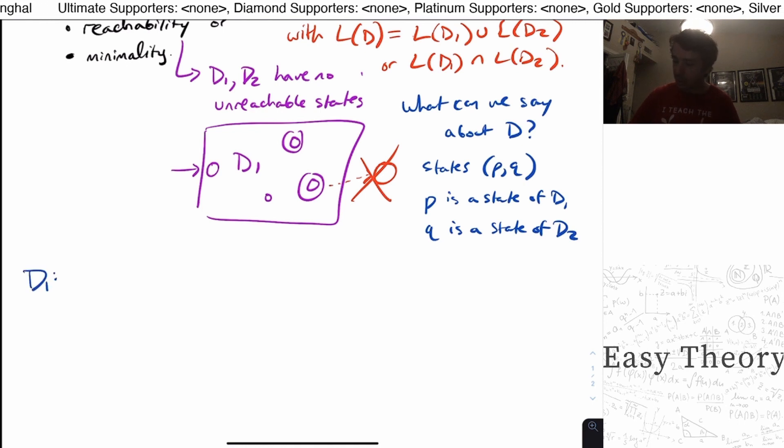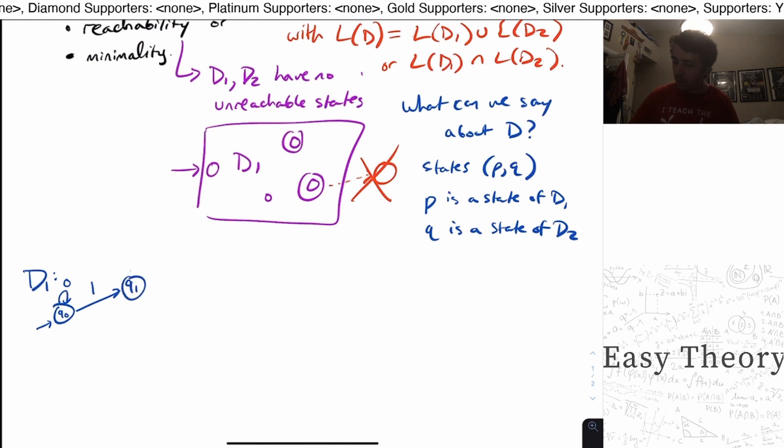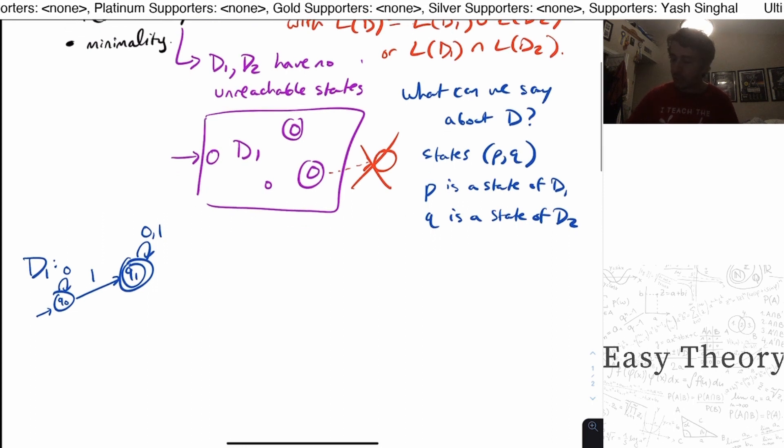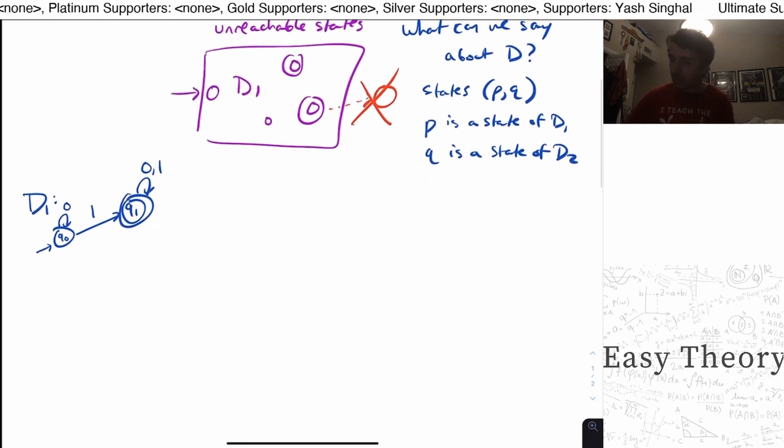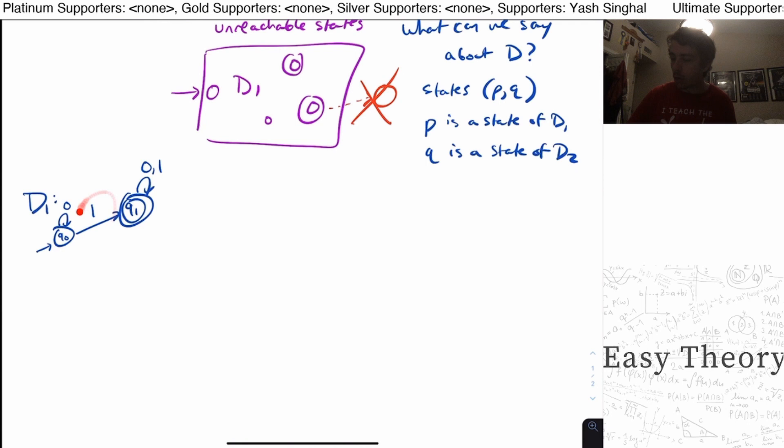So let's look at a DFA D1 right here, where there's a state q0, it loops on zero, goes on one to a final state called q1, which loops on everything. So just a simple two state machine, which means that we must have at least one occurrence of one. And if we don't, we'll never accept.